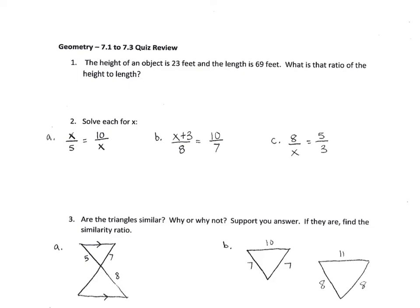7-1 to 7-3 quiz review. The height of an object is 23 feet and the length is 69 feet. What is the ratio of the height to length? The first that's given is the height, so you need to write the height first. So the height is 23 feet and the length is 69 feet.